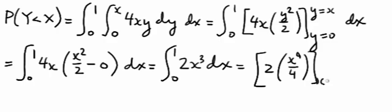And evaluating that at x is 0 and x is 1, we get 1 half. So the probability that y is less than x, we've just determined to be 1 half.